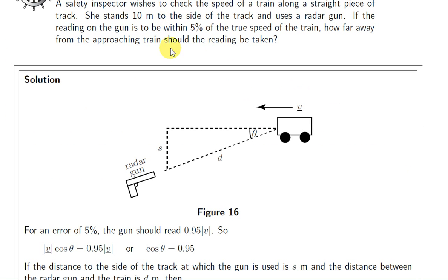A safety inspector wishes to check the speed of a train along a straight piece of track. She stands 10 meters to the side of the track, so this distance S is 10 meters, and uses a radar gun. If the reading on the gun is to be within 5% of the true speed of the train, how far away from the approaching train should the reading be taken?